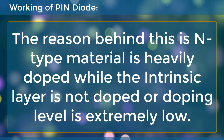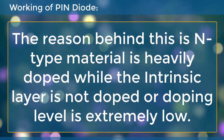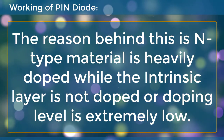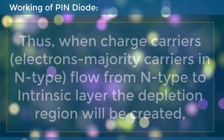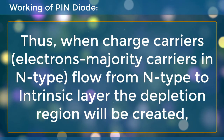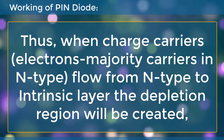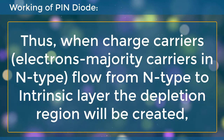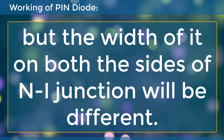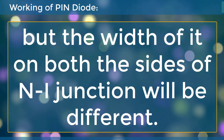The reason behind this is that N-type material is heavily doped while the intrinsic layer is not doped, or its doping level is extremely low. Thus, when charge carriers — electrons, which are majority carriers in N-type — flow from N-type to the intrinsic layer, the depletion region will be created. But the width of it on both sides of the N-I junction will be different.